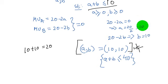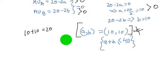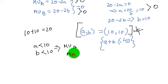And also we saw since marginal utility of A is greater than 0, that is these are greater than 0 subject to the constraint that A is less than 10, B is less than 10.